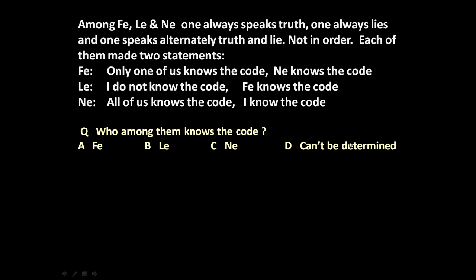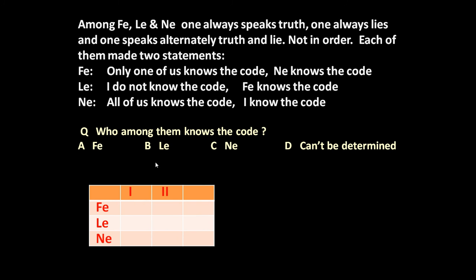To answer this question, let us prepare a small table. The three persons are Phi, Li, and Ni. Each of them made two statements — statement one and statement two. The simple procedure is to start from the first person, Phi, and assume he made two true statements.